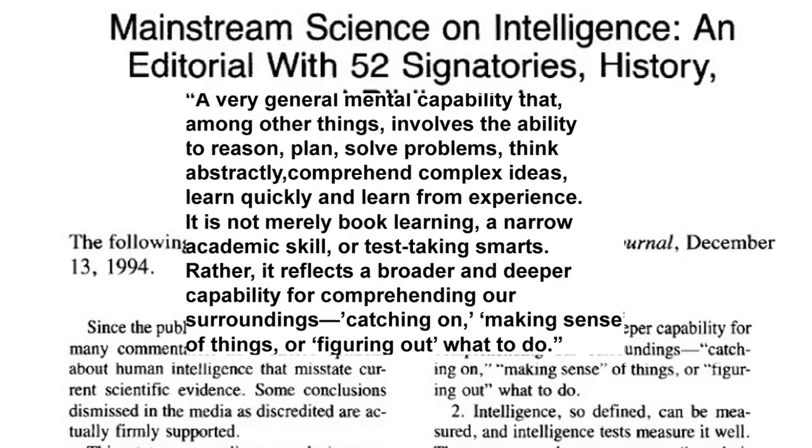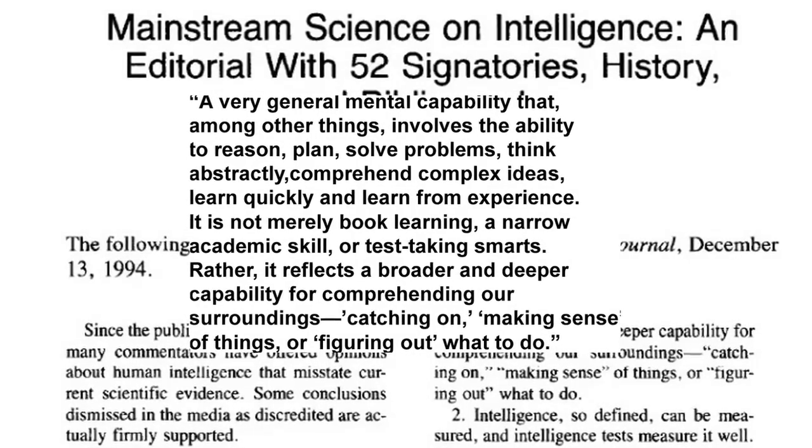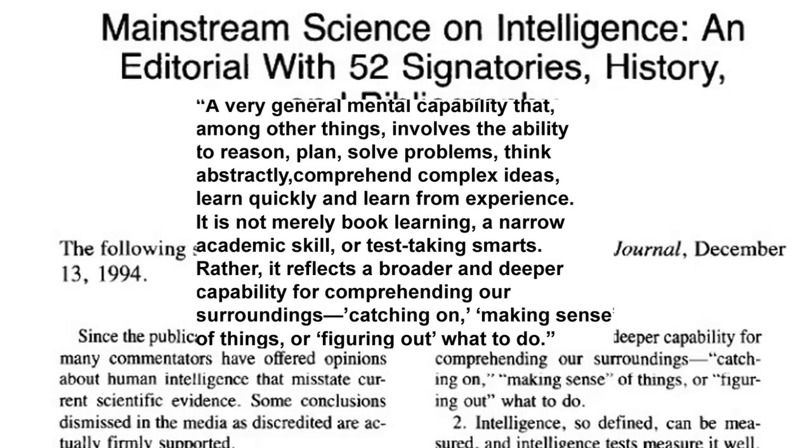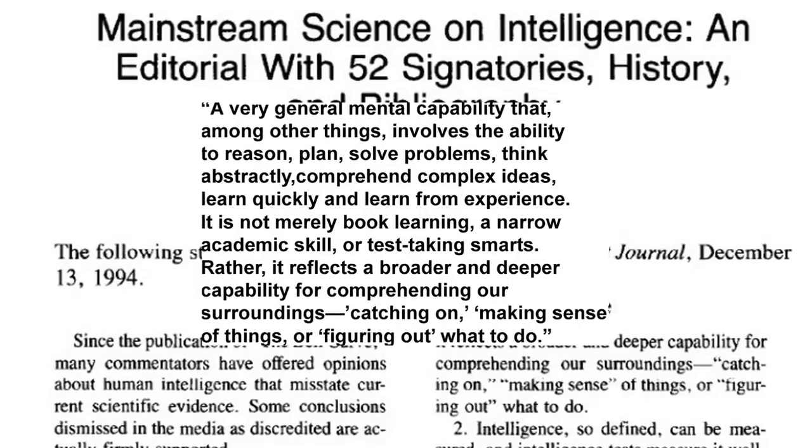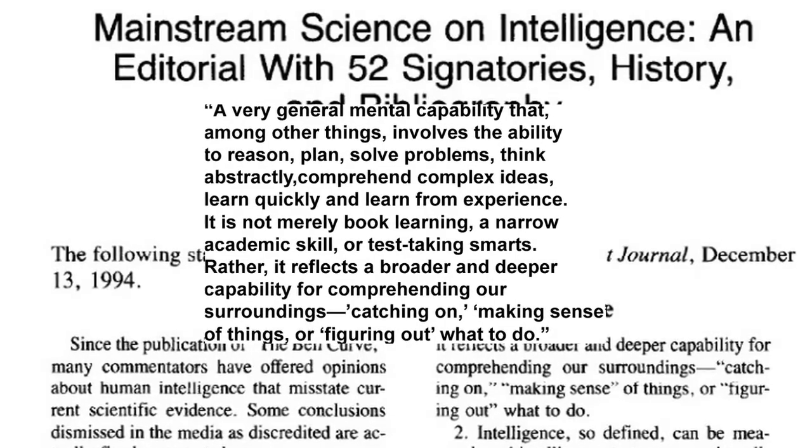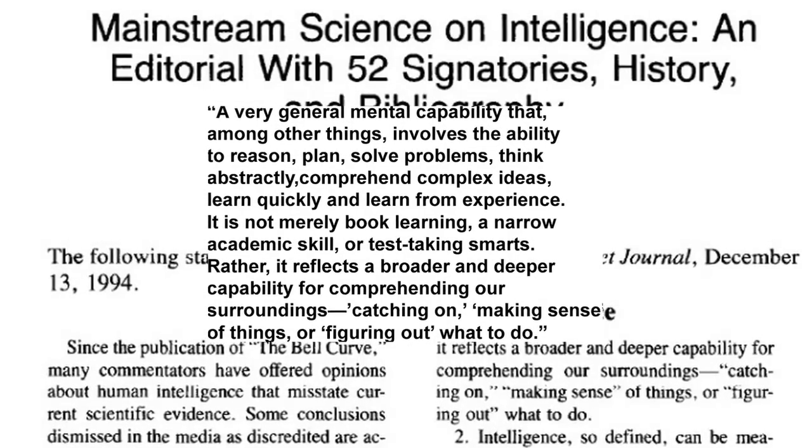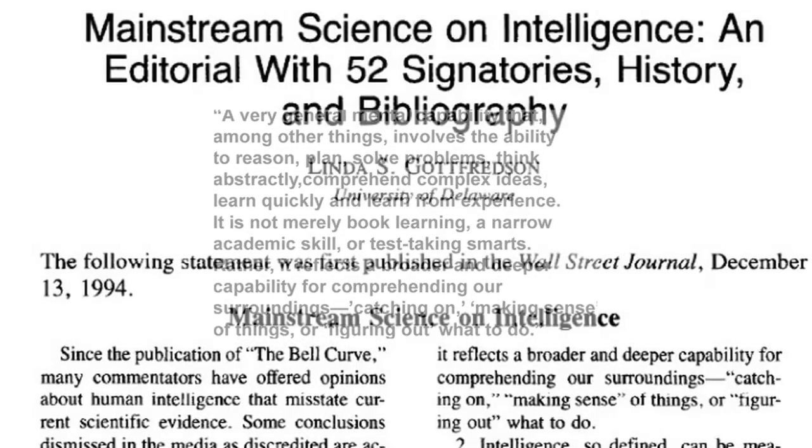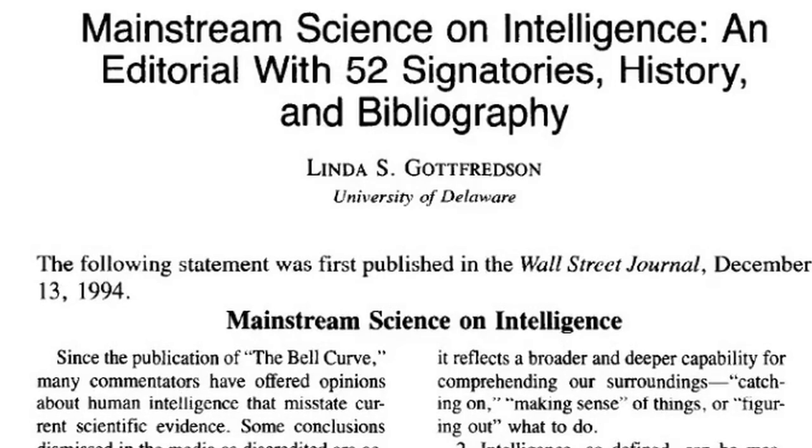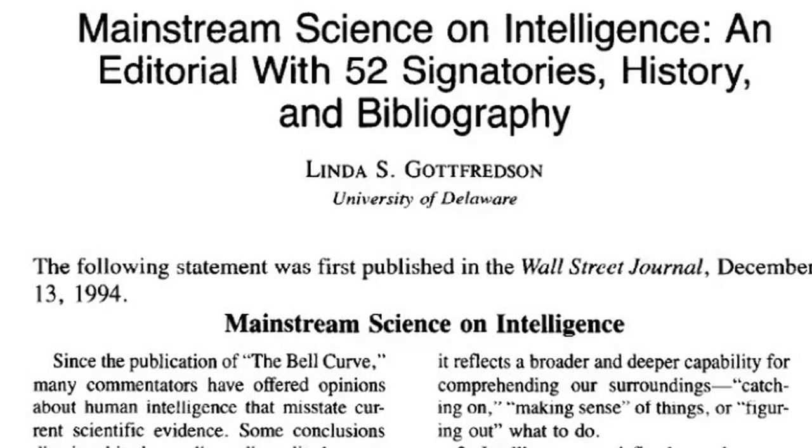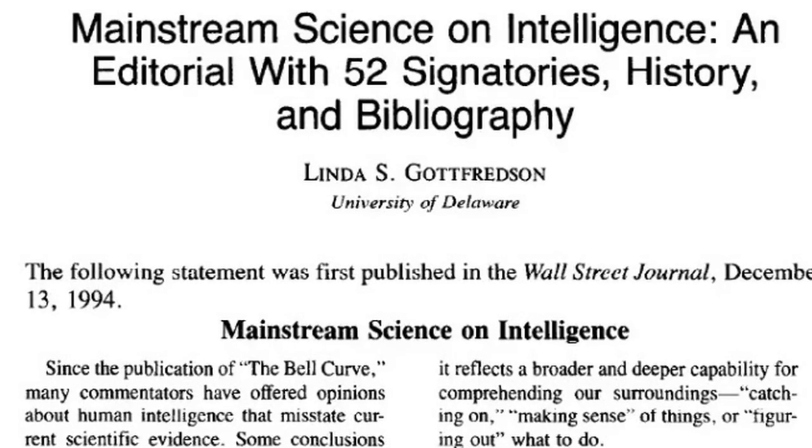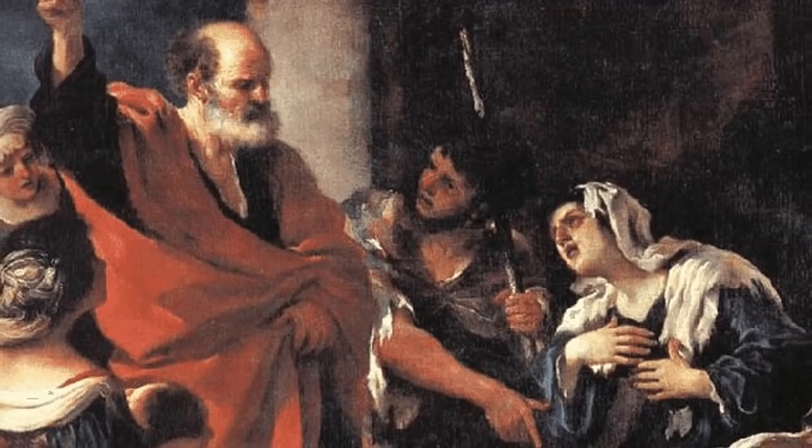The definition they presented was: a very general mental capability that, among other things, involves the ability to reason, plan, solve problems, think abstractly, comprehend complex ideas, learn quickly, and learn from experience. It is not merely book learning, a narrow academic skill, or test-taking smarts. Rather, it reflects a broader and deeper capability for comprehending our surroundings, catching on, making sense of things, or figuring out what to do. Even that definition is highly criticized, but it lists specific features that we expect in intelligence: reasoning, planning, problem-solving, abstract thinking, complex comprehension, quick learning, and learning from experience.